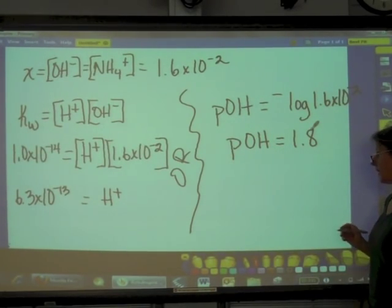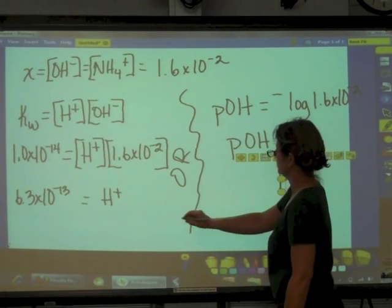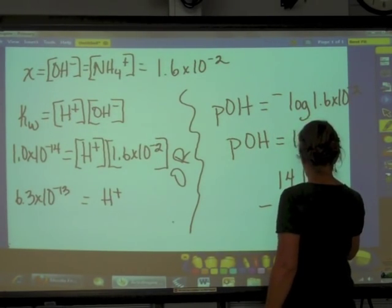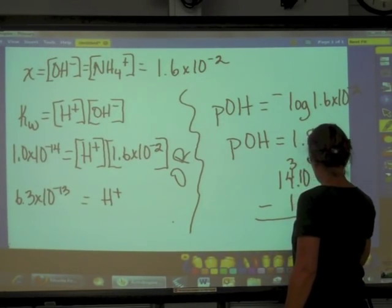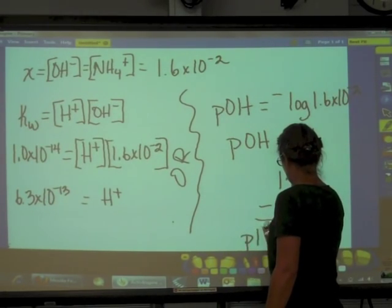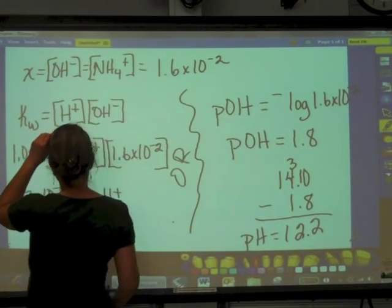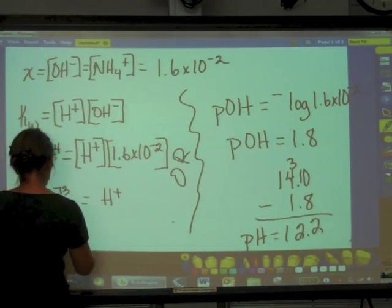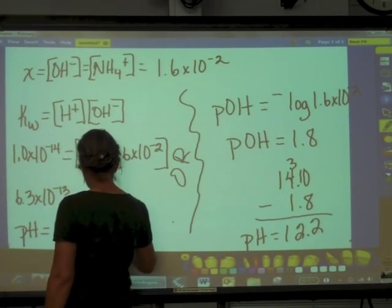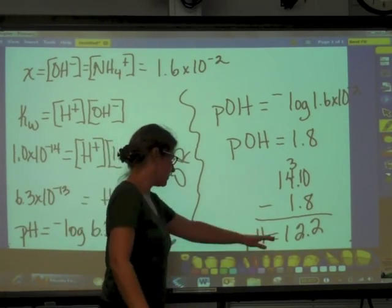Now, how do I convert that into a pH? I say 14.0 minus 1.8 is going to give me 12.2. So I could do it this way and I get a pH of 12.2. Or I could have done it this way. And then, of course, I would find the negative log of 6.3 times 10 to the minus 13th, which is going to give me the same answer.